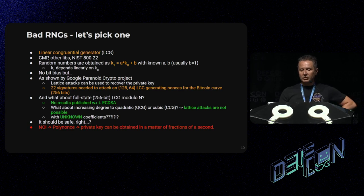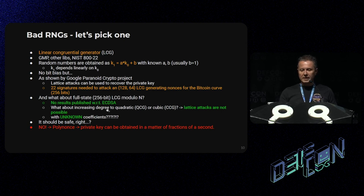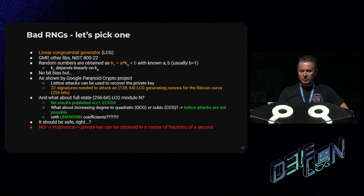So if your LCG is not full state but is 128-bit, for example, for the Bitcoin curve, then with as low as 22 signatures you can get the private key. But here we want to go beyond. What if you use a full-state LCG? There are no results published so far on this. And what if you increase the degree to quadratic or even cubic? Then lattice attacks are not possible. And what if you keep the coefficients unknown and secret? You may think you are safe — but in fact, no. We show that with Polynonce, we can retrieve the private key in a fraction of a second.